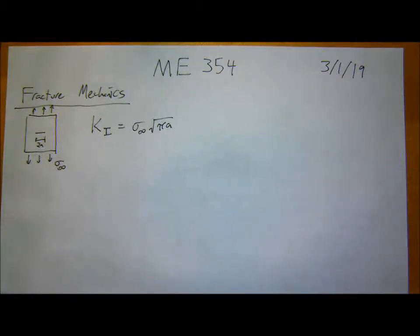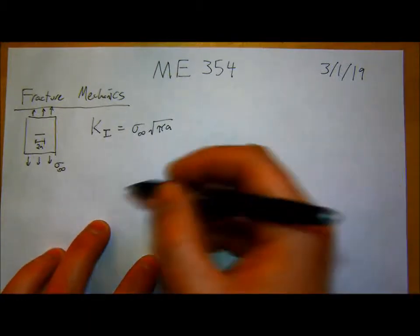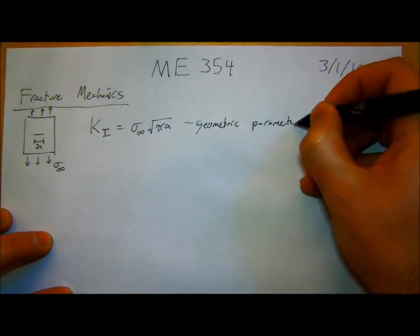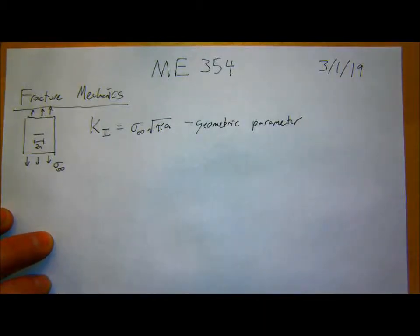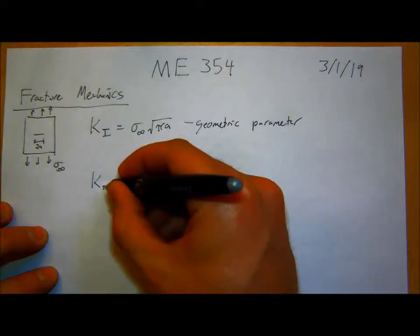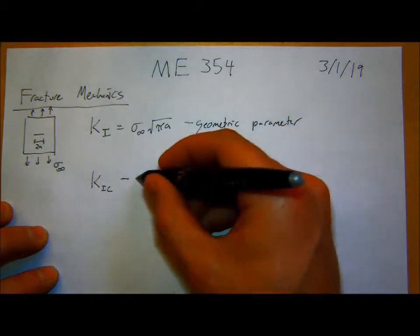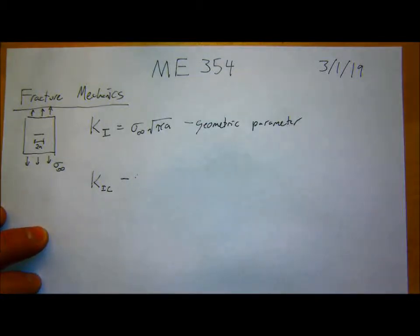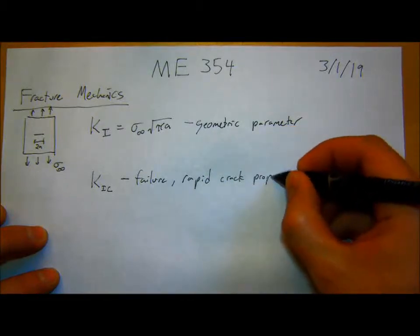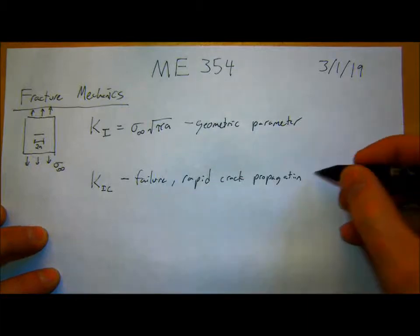K is equal to sigma infinity square root of pi a, where this is my far field applied stress. And remember that I showed different fracture modes. K1 was this fracture mode, a normal or an opening stress. There's also a shear mode and an out-of-plane, an in-plane shear mode and an out-of-plane shear mode. K now is a geometric parameter, given the size basically of our crack A.